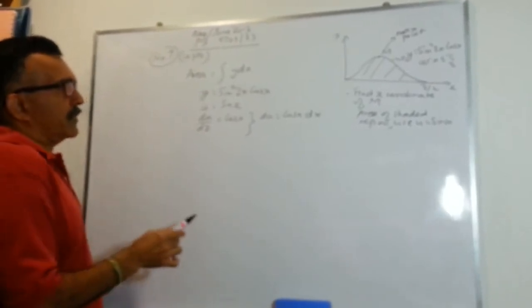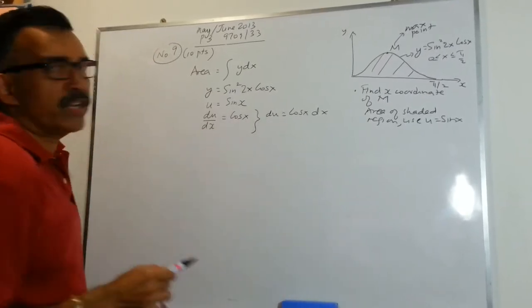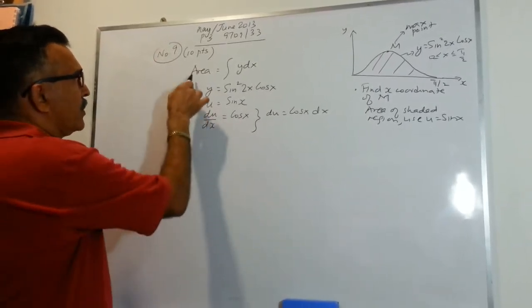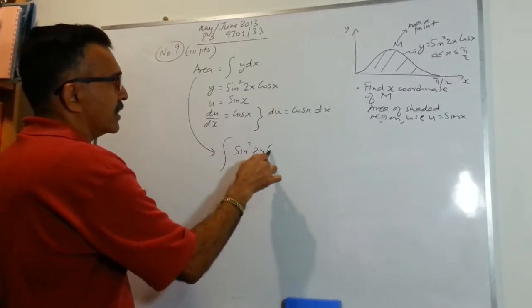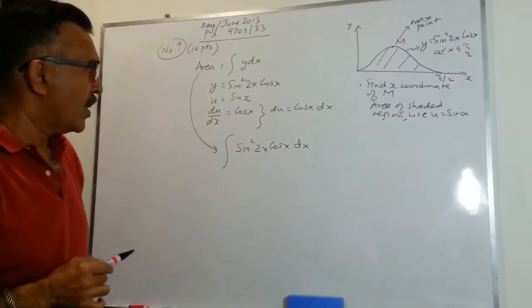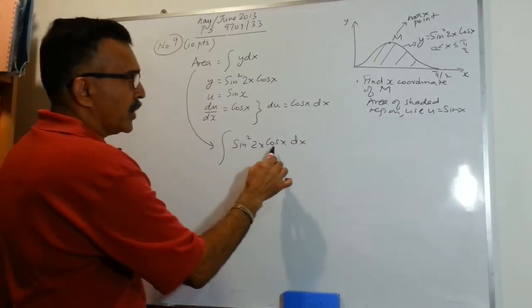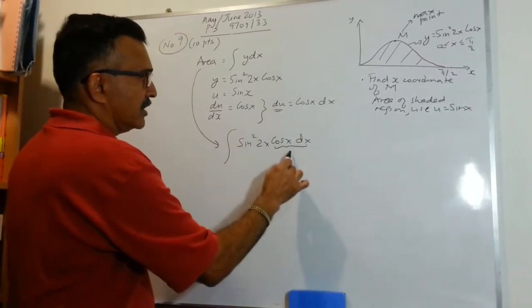What else do we need? Let's write the integral first. So the area here will be equals to sin squared 2x cos x dx. Now you can see cos x dx. We are going to replace with what? Good. Du.